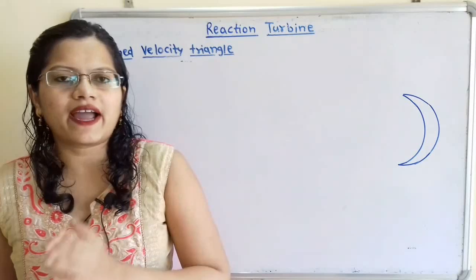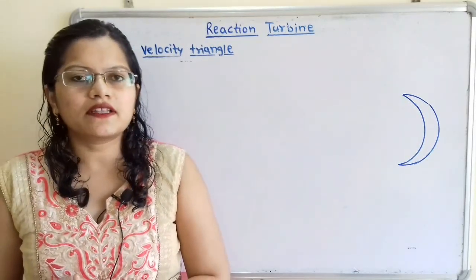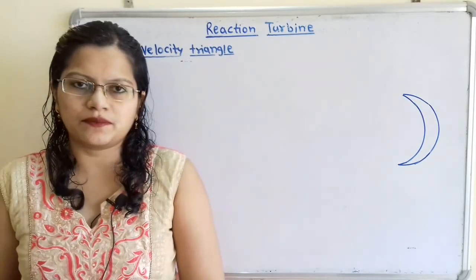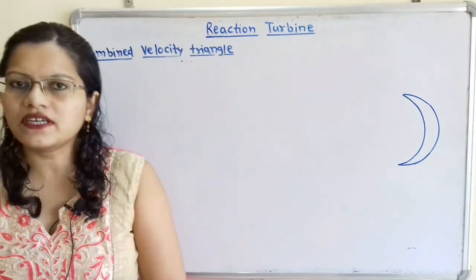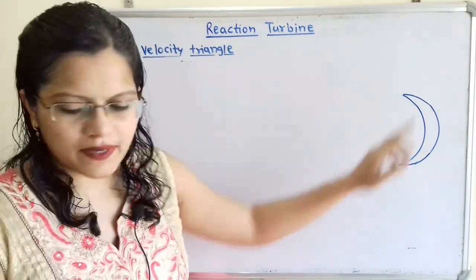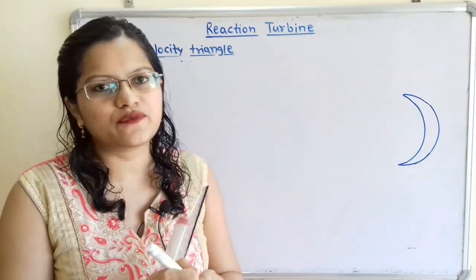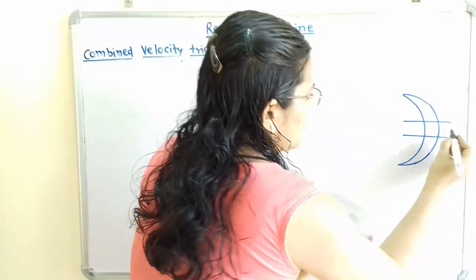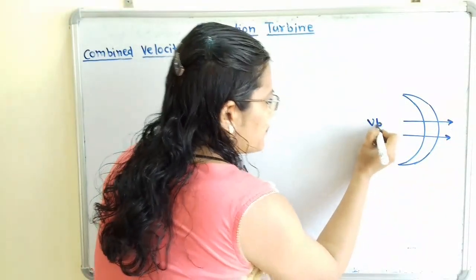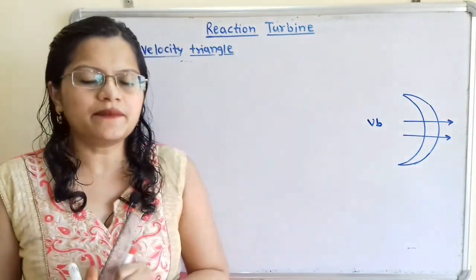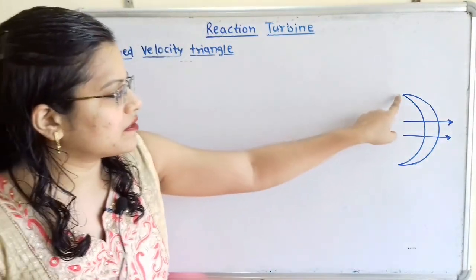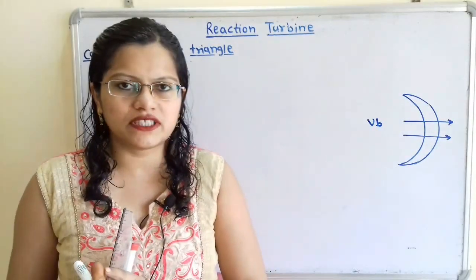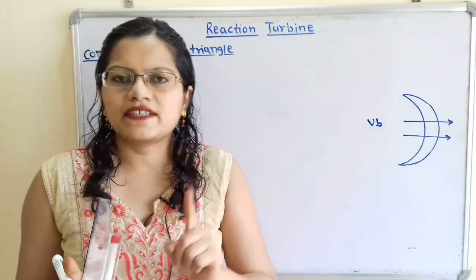The function of the guide blade is to allow steam to enter inside the runner blade without shock. We will understand this concept with the help of a diagram. Here we show the velocity of the blade, VB, in the horizontal direction towards the right-hand side. For shockless entry from the guide blade to the runner blade, the relative velocity at the inlet tip must be tangential to the blade angle.